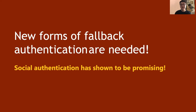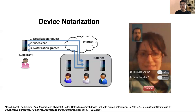So what else can we use? Maybe social authentication — basically getting authenticated by your social contacts. My co-authors developed a new form of social authentication called device neutralization. In this system, when the applicant needs authentication, they video chat with any of the notaries, who then authenticates the supplicant via a live video chat. This system looks promising and has been tested in lab settings. However, in real life, authentication could happen at any time and any place, so we need to test it in the field.